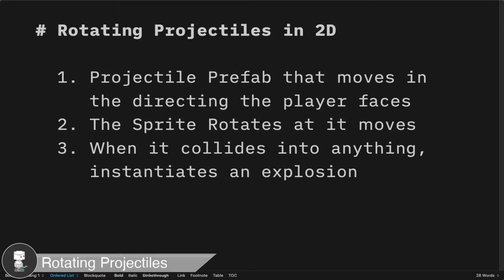In this video, we're going to be making rotating projectiles in 2D. We're going to create object prefabs that will get instantiated and depending on the direction the character is facing, it will move in that same direction. As soon as it hits something, it will instantiate an explosion.